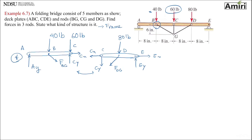Now let's look at the free body diagram ABC. How many unknowns do I have? I have CX, CY, force BG, and AY — I have four unknowns. So I've got to go one step back and draw a free body diagram of the entire frame to find support reactions: AY, EX, and EY.